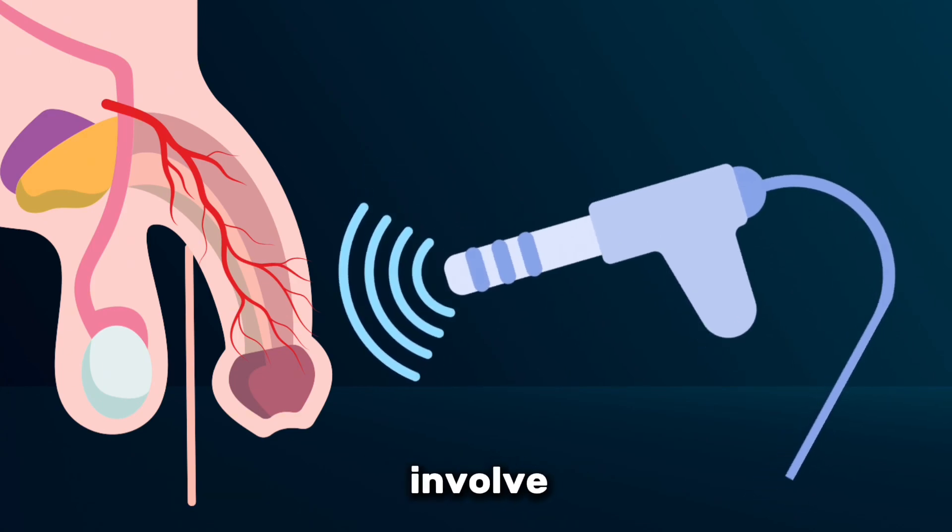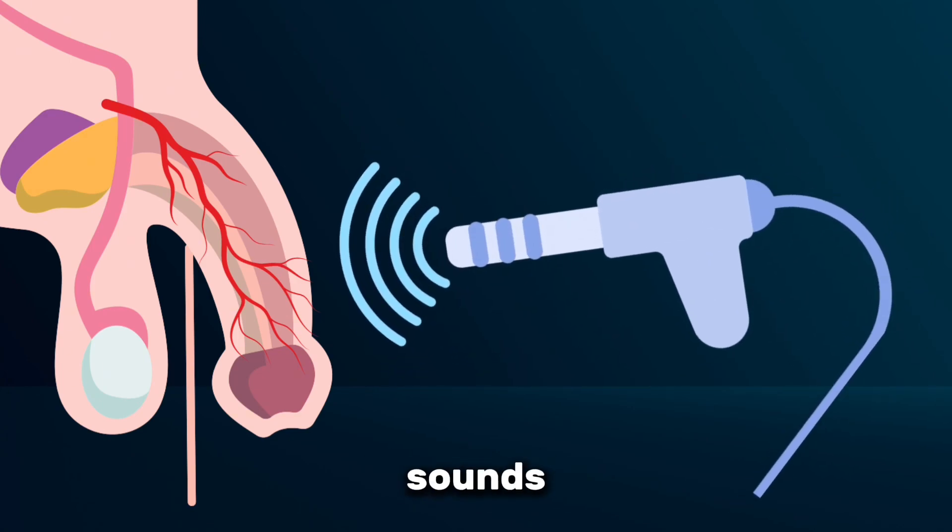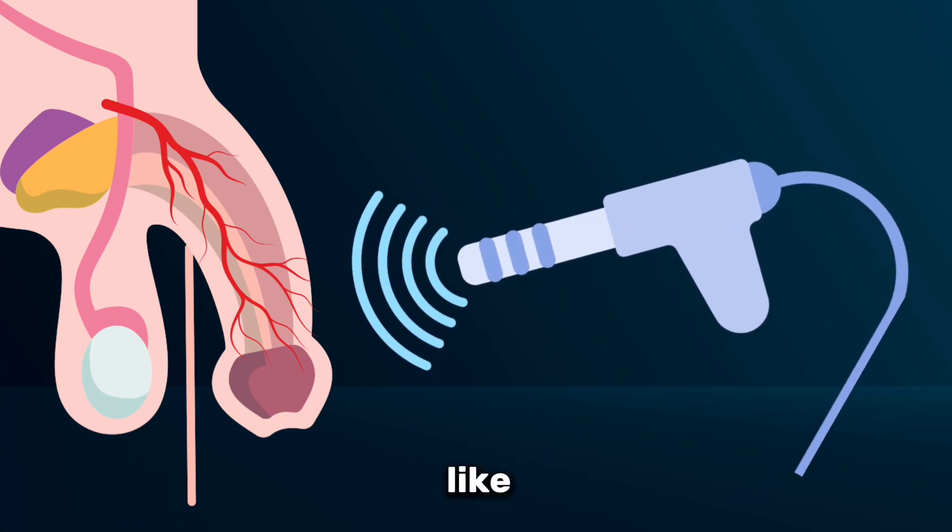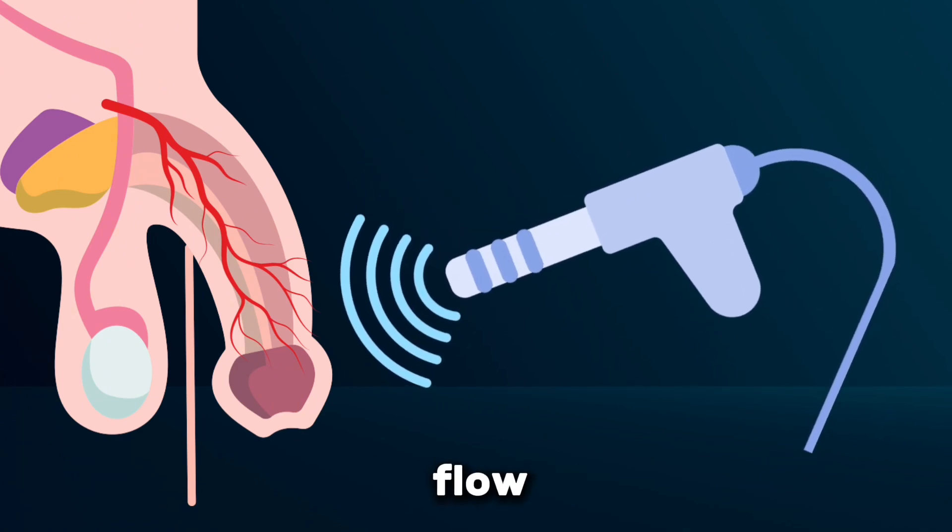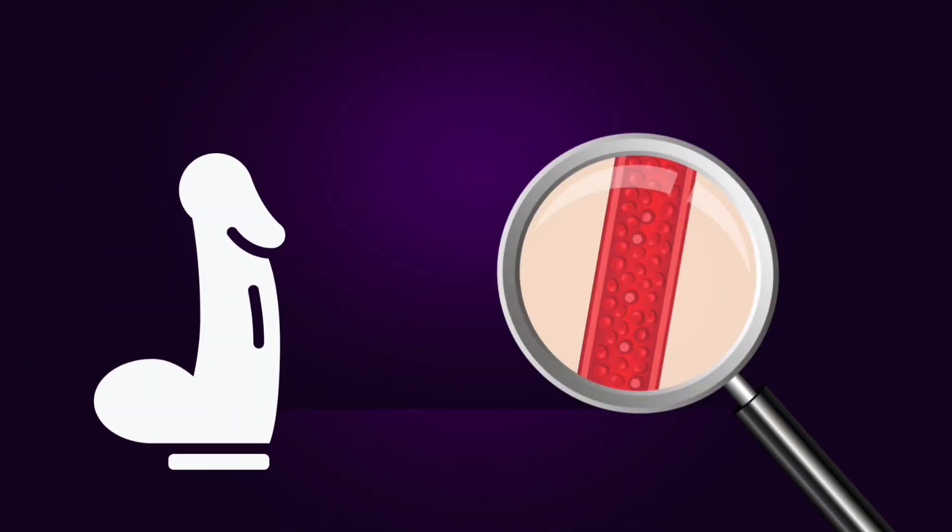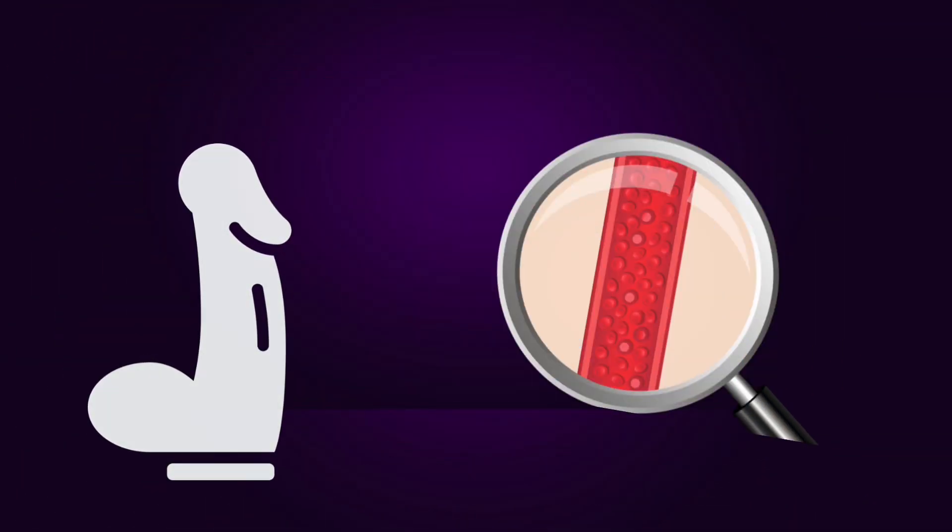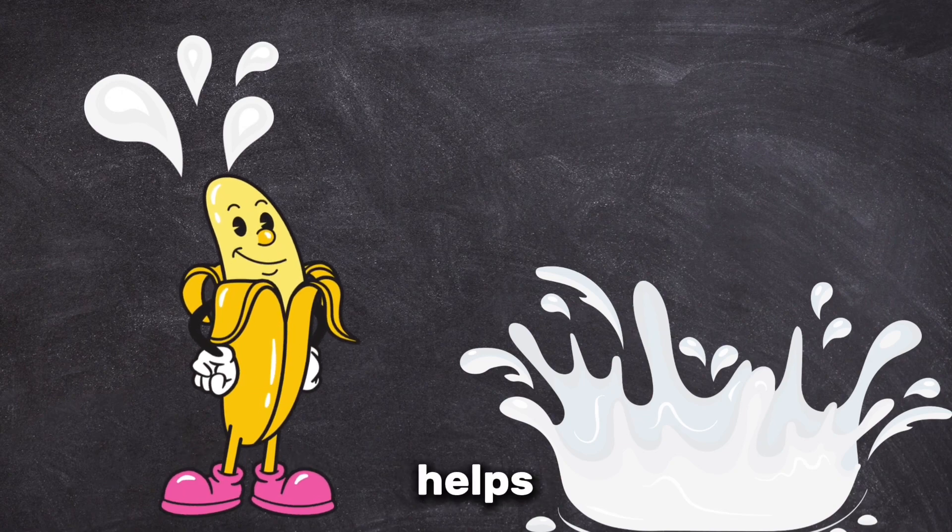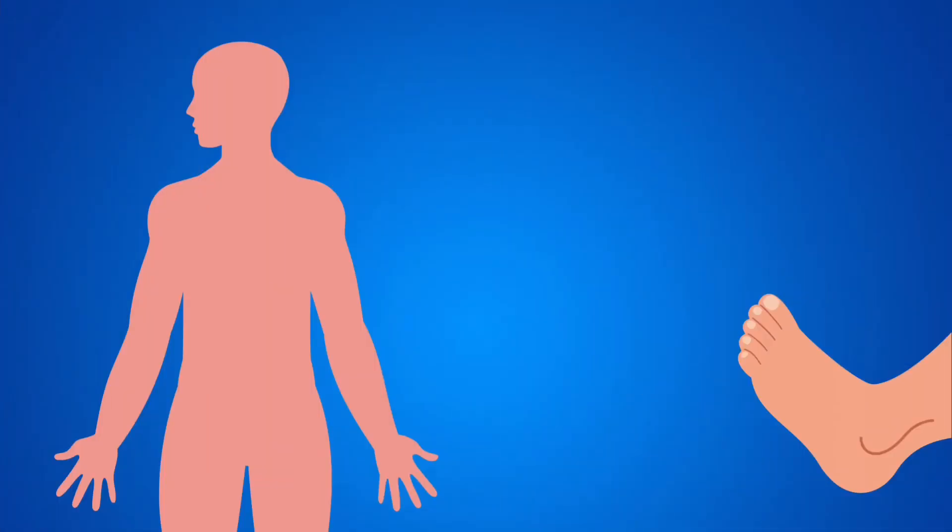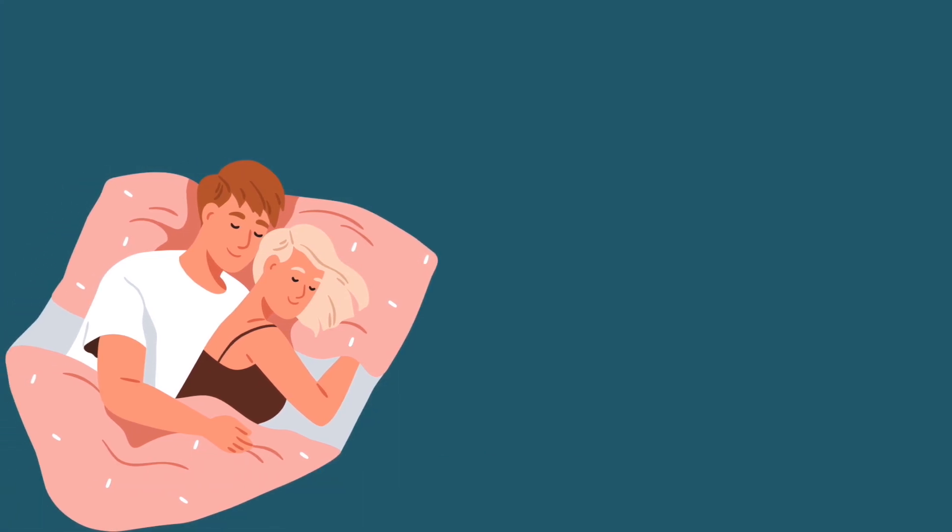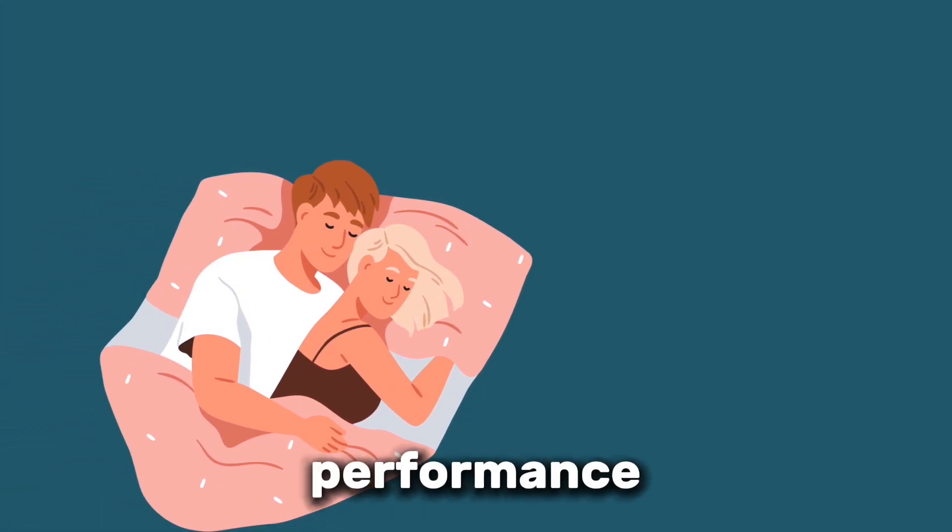Shockwave therapy involves using strong sound waves on specific areas like the penis. These waves help increase blood flow and encourage the growth of new blood vessels. This improved circulation is key because it helps the body naturally achieve and maintain erections. It's like giving your body a push to kickstart its own healing process, aiming to enhance and regenerate sexual performance.